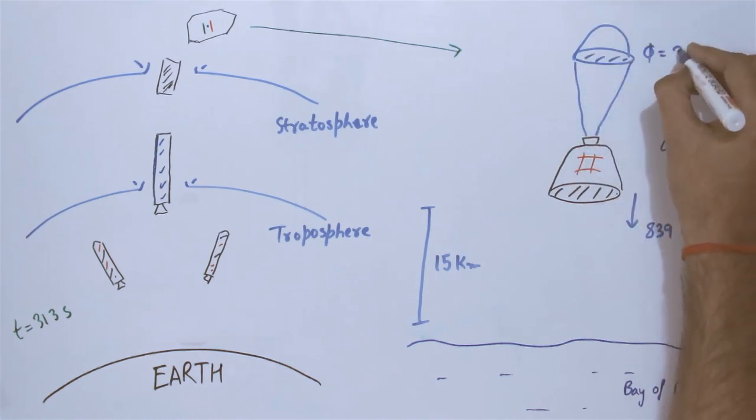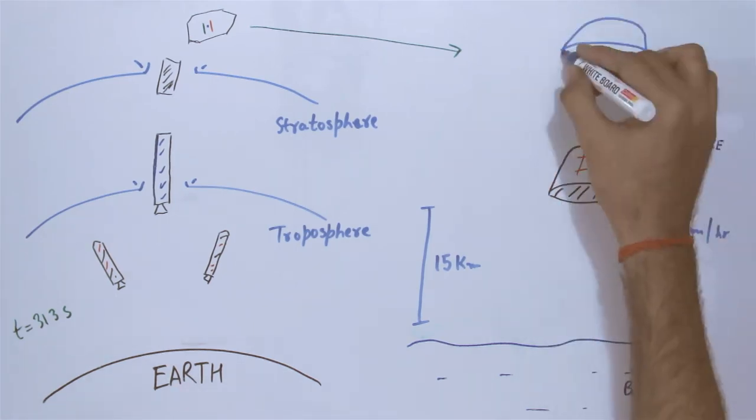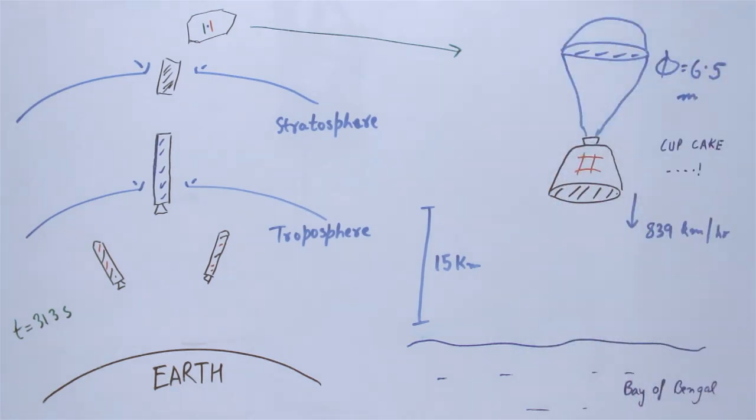First, the 2.5 meter diameter pallet parachutes come out, followed by the 6.5 meter drog parachutes, which cut the capsule's velocity down to 180 kmph.